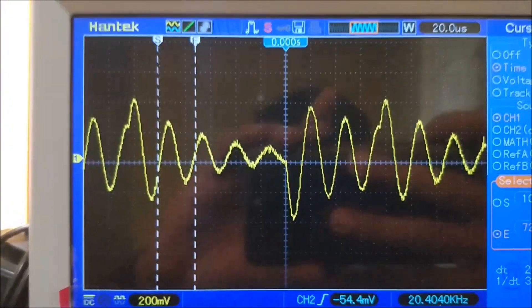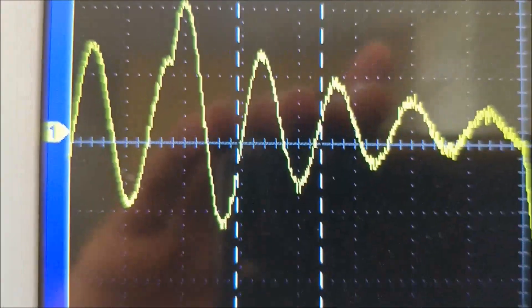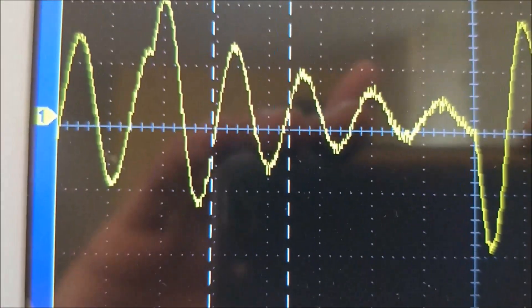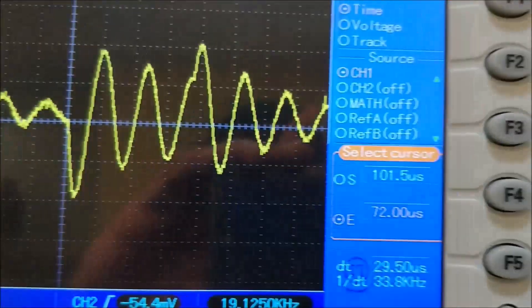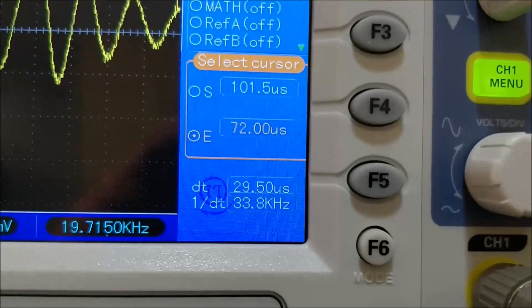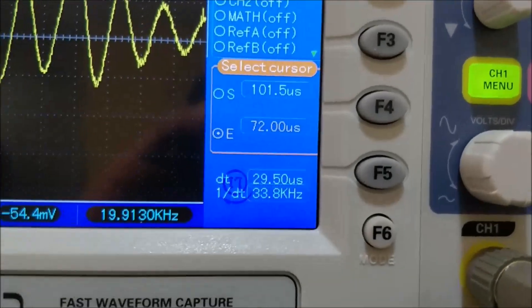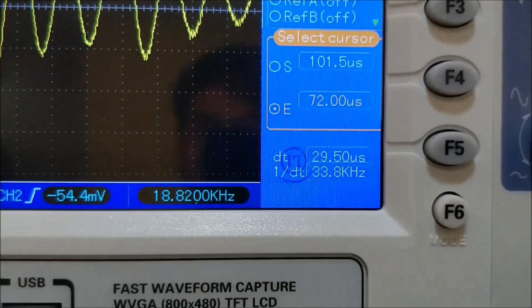Okay, now I have set the cursors properly. As you can see, I'm measuring one complete time period starting from the on time of this wave to the off time. And you can see the dt value, that is the difference between the two lines, is 29.5 microseconds. When you calculate the frequency, you will get 38.8 kilohertz.